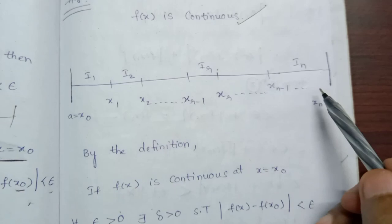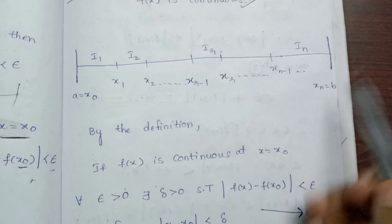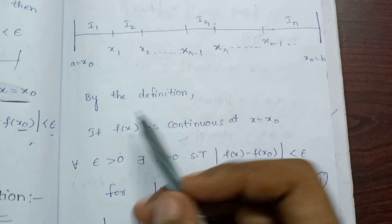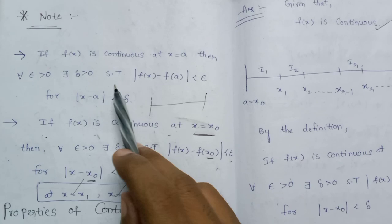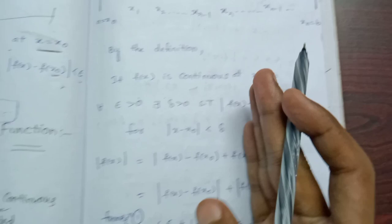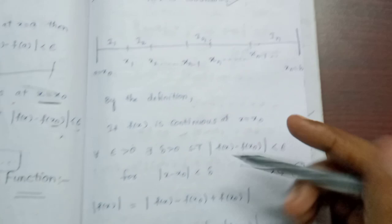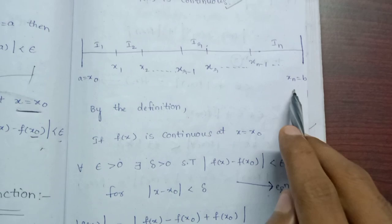If x is continuous, you will be able to read the partition. If x0 doesn't know what to do, you will not be able to read it. Now, if we are looking for the definition, I will explain the note here.